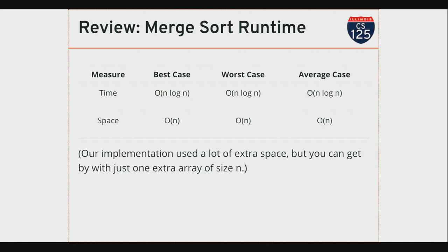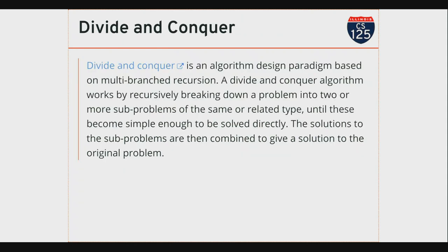Now let's look at our final algorithm. Both merge sort and quick sort are examples of a technique called divide and conquer — a lot of recursive algorithms fall into this category. The idea behind divide and conquer is to figure out how to make a problem smaller so that eventually the problems are simple enough to be solved directly, then combine those solutions to give a solution to the original problem. You hear this a lot in computer science because it's a great problem-solving technique: take a big problem, make it smaller and smaller, until it's small enough to solve easily.